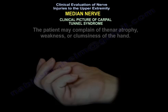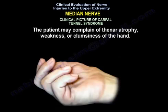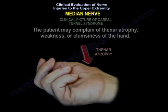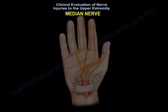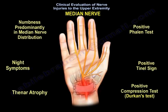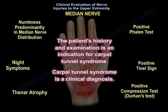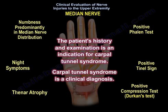The patient may also complain of thenar atrophy, weakness, or clumsiness of the hand. The patient's history and examination is an indication for Carpal Tunnel Syndrome. Carpal Tunnel Syndrome is a clinical diagnosis.